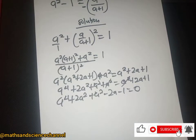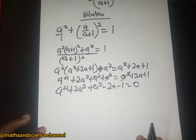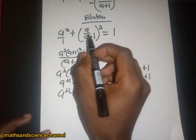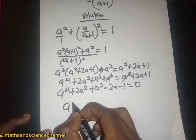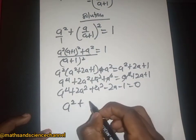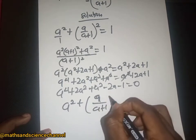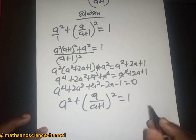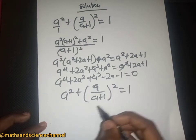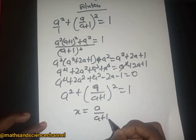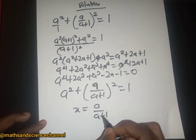Solving this quadratic equation looks a bit cumbersome, so let's use another approach. Since we have a over (a plus one), squared, equal to one, we are going to set a variable x equal to a over (a plus one).